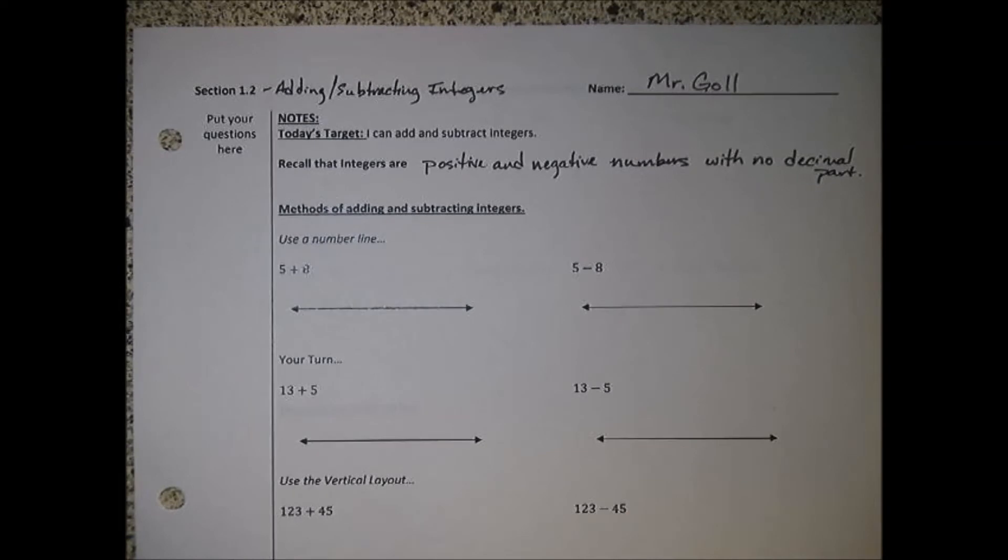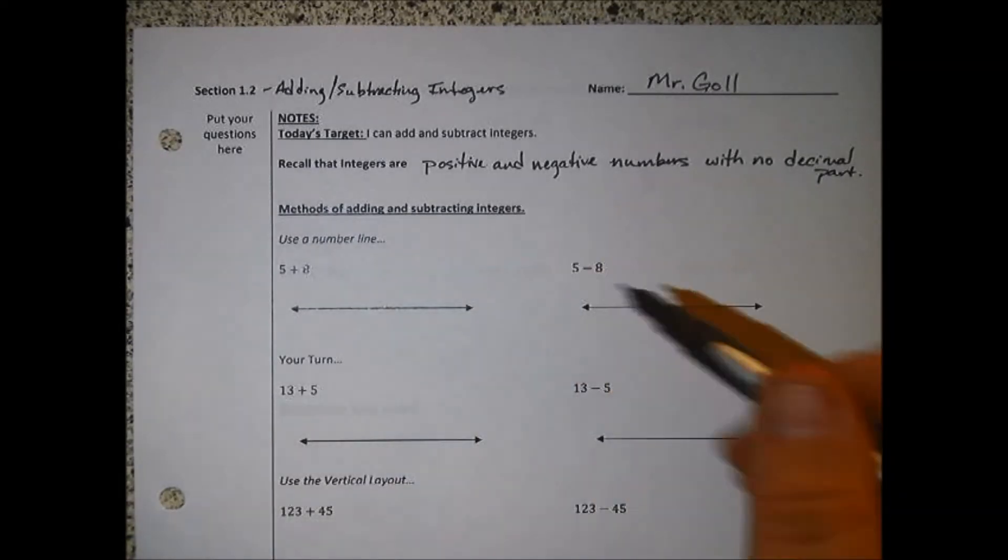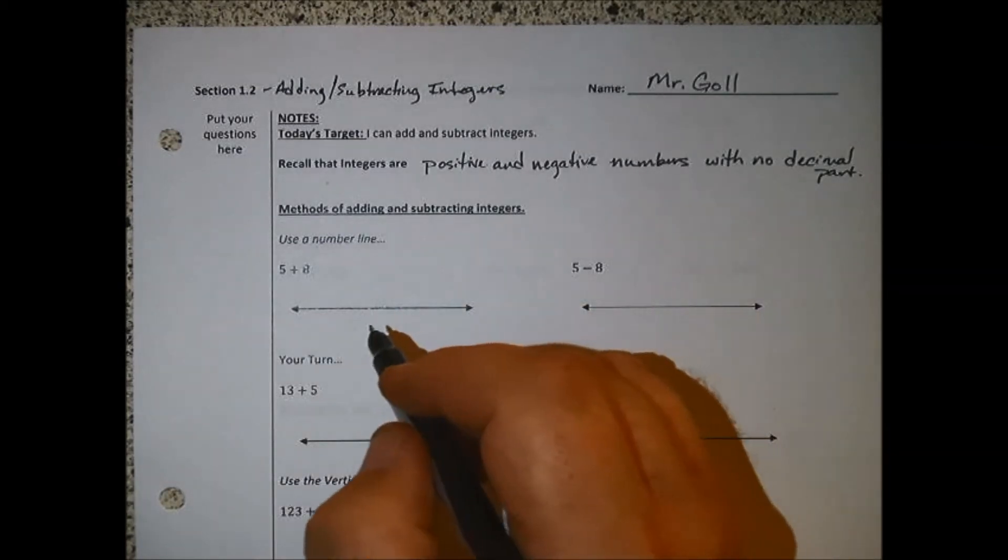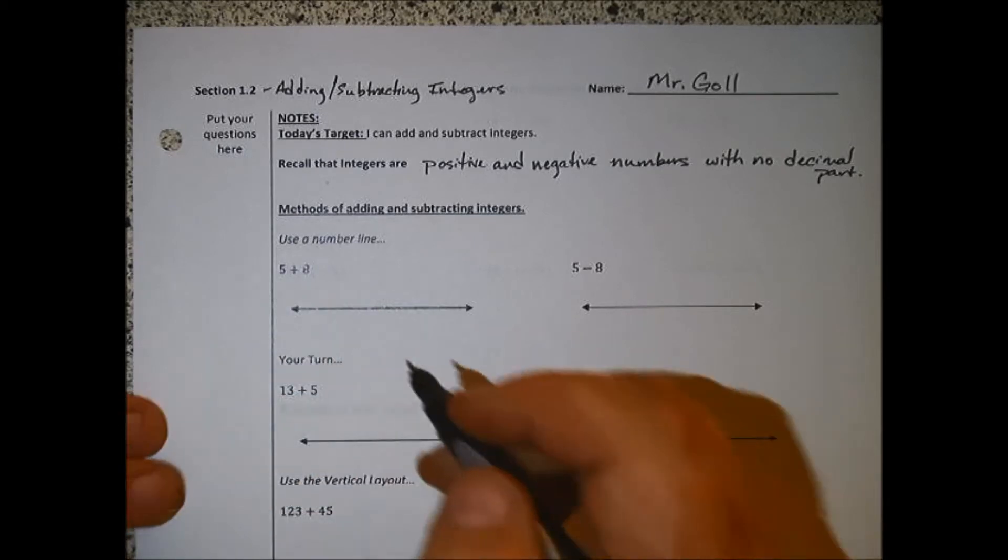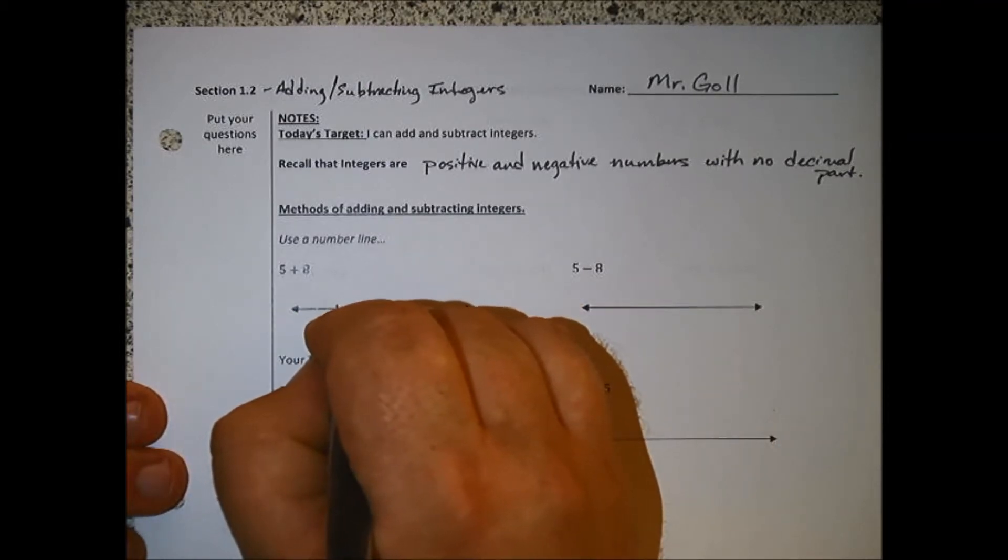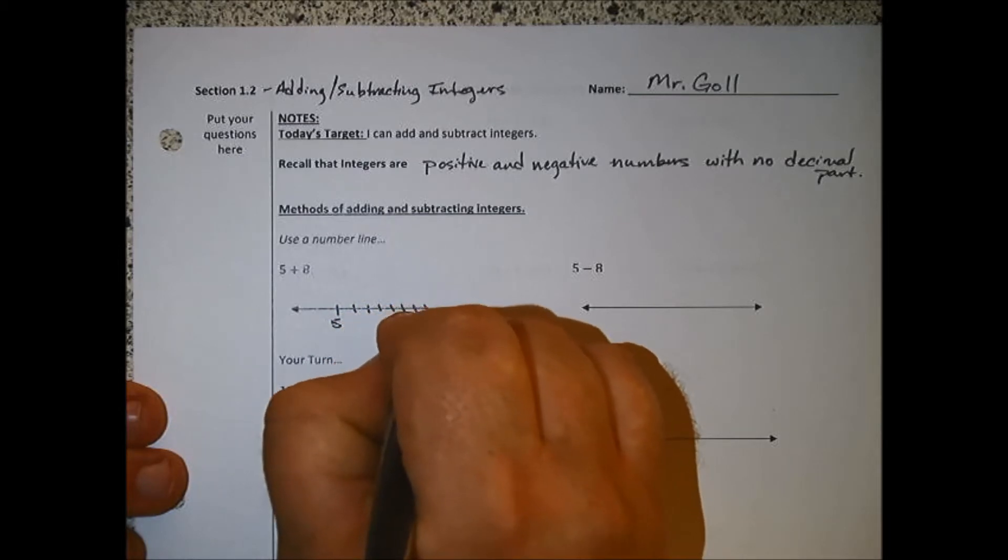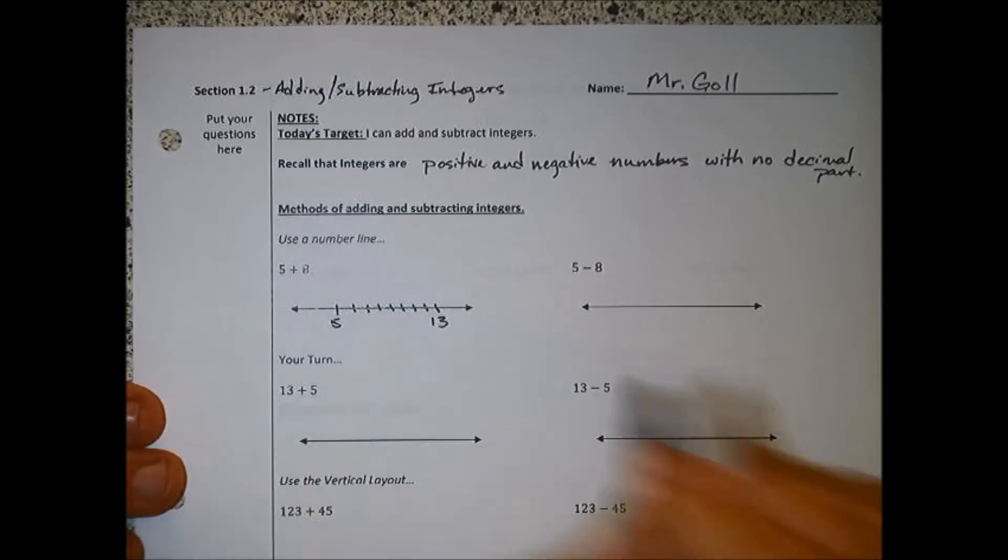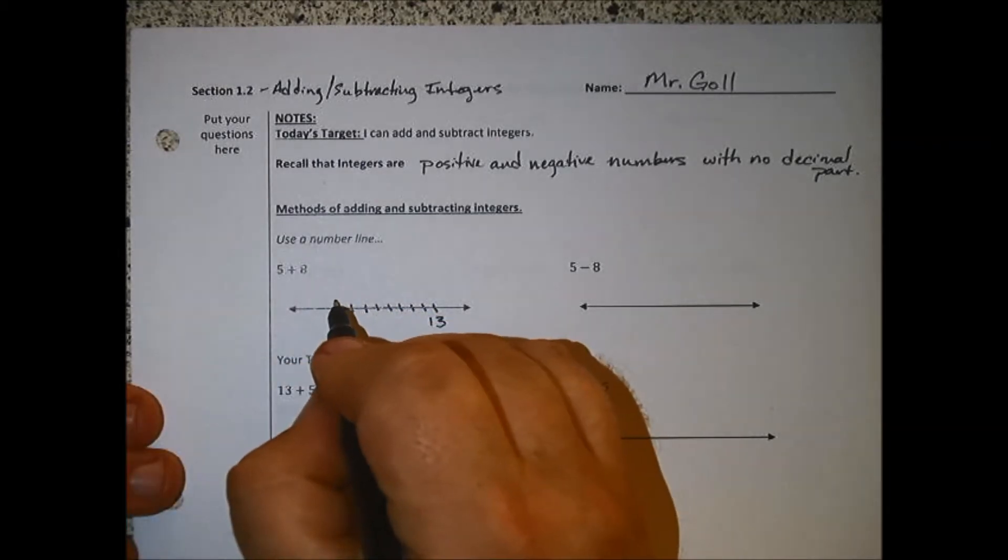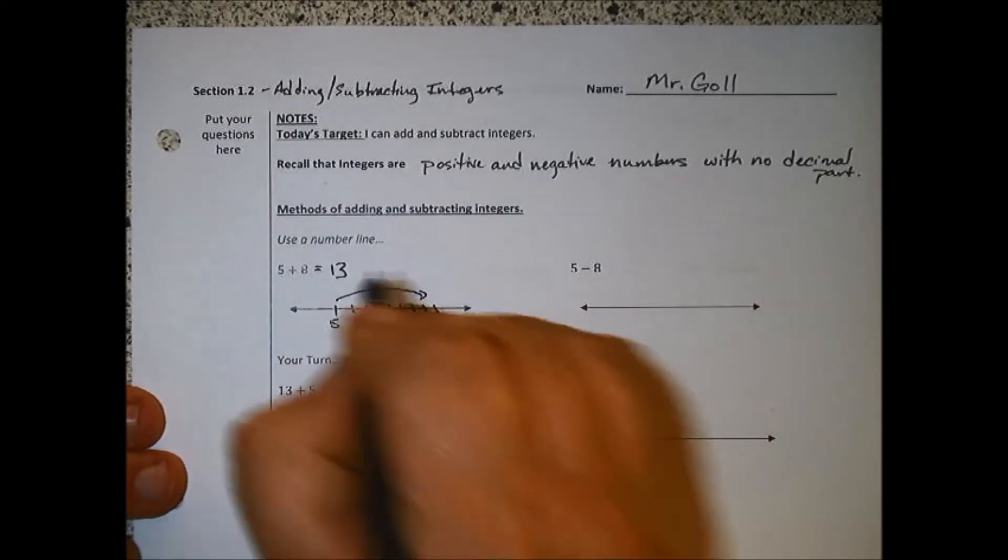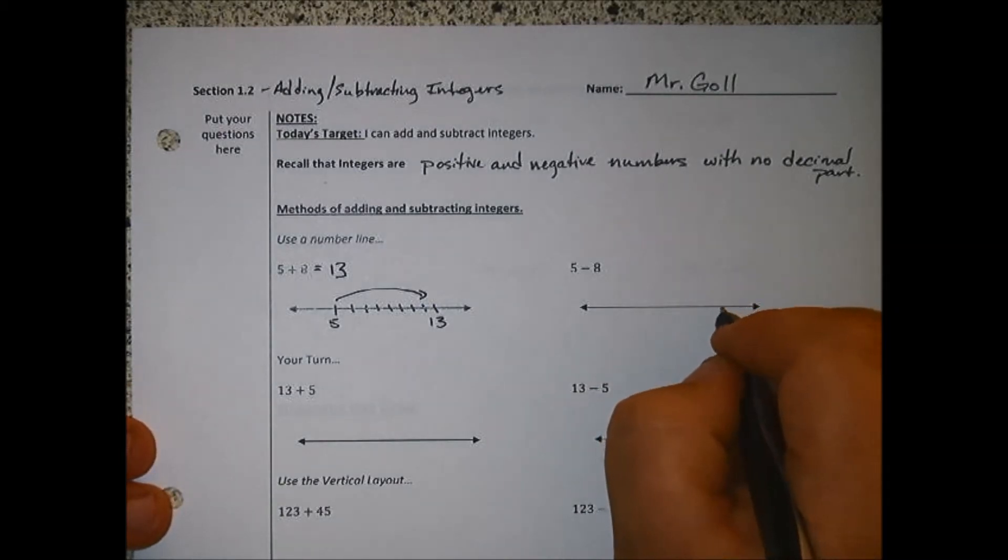Positive and negative numbers with no decimal part. Today we're going to start off by using a number line to add and subtract. We're going to go over a couple different ways to handle that. First, if I'm going to use a number line, I'm going to go 5 plus 8. I'll put a 5 and add 8 tick marks that way: 1, 2, 3, 4, 5, 6, 7, 8. We have 5, 6, 7, 8, 9, 10, 11, 12, 13. When I add, I go to the right, so 5 plus 8 is 13.